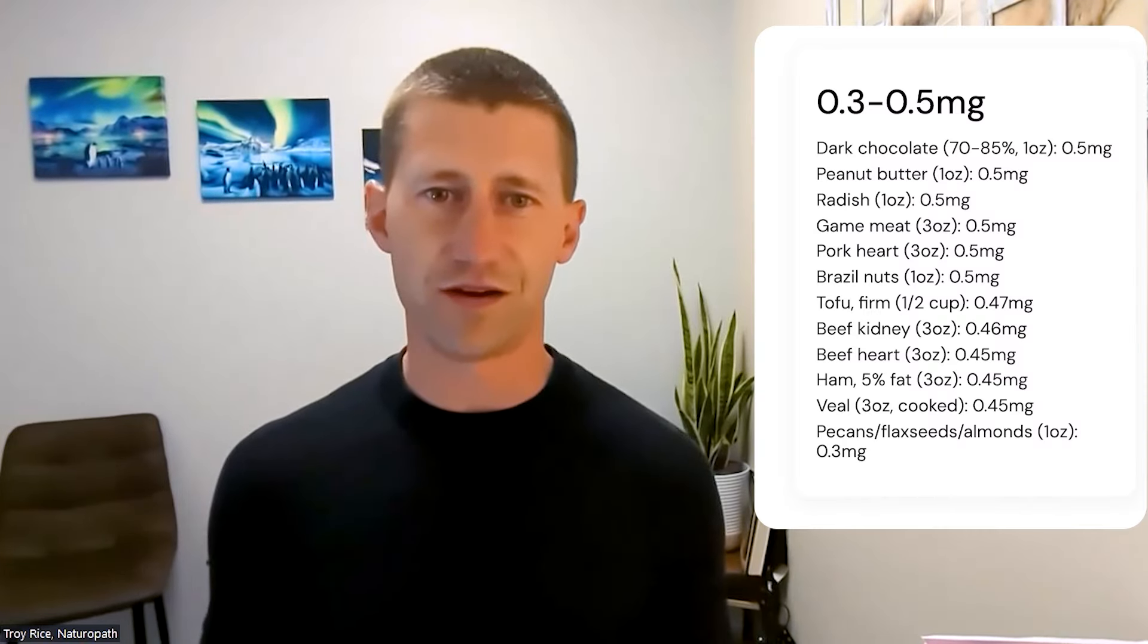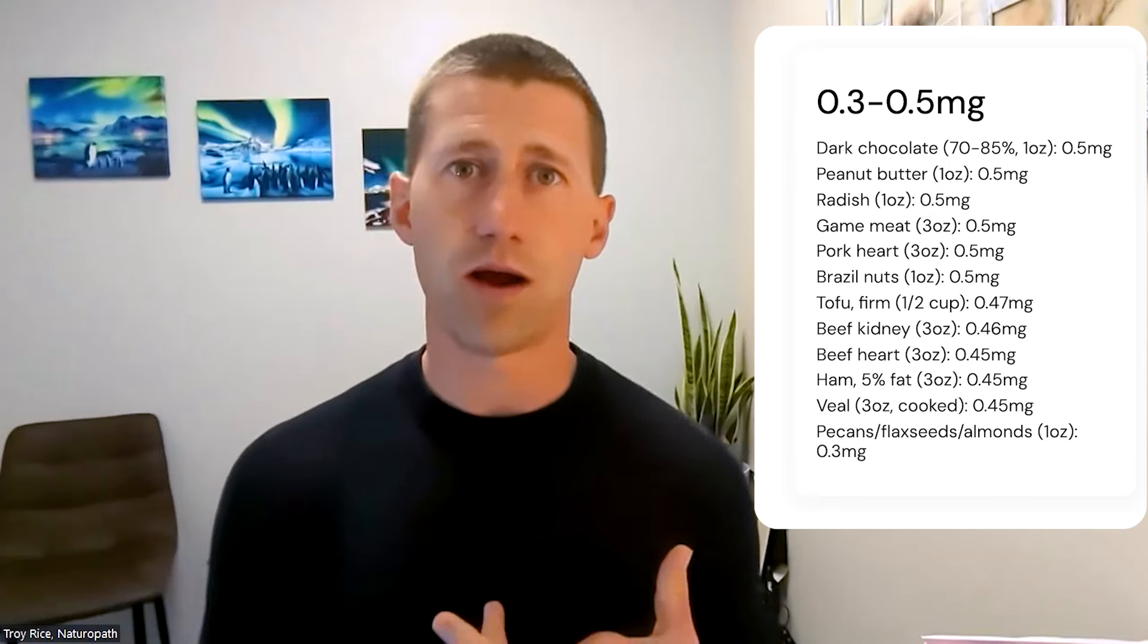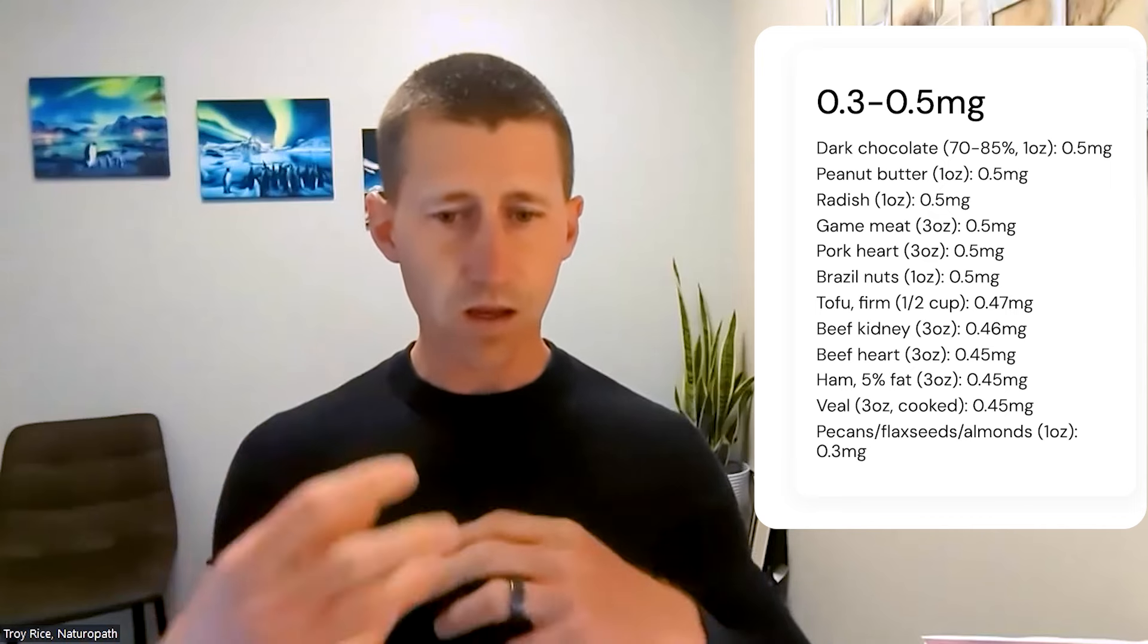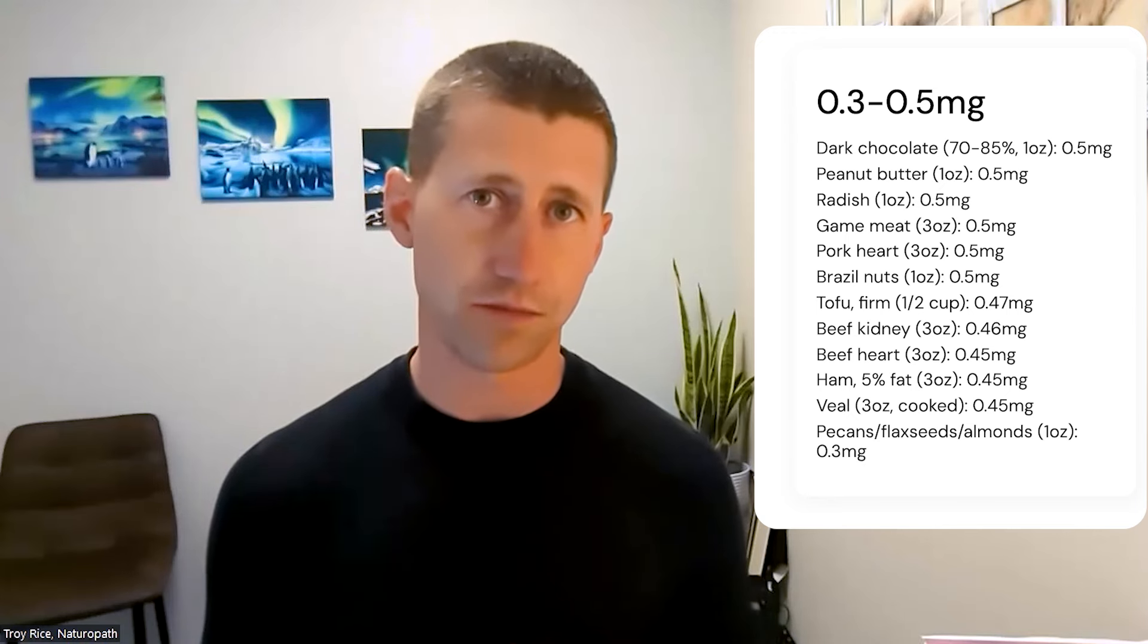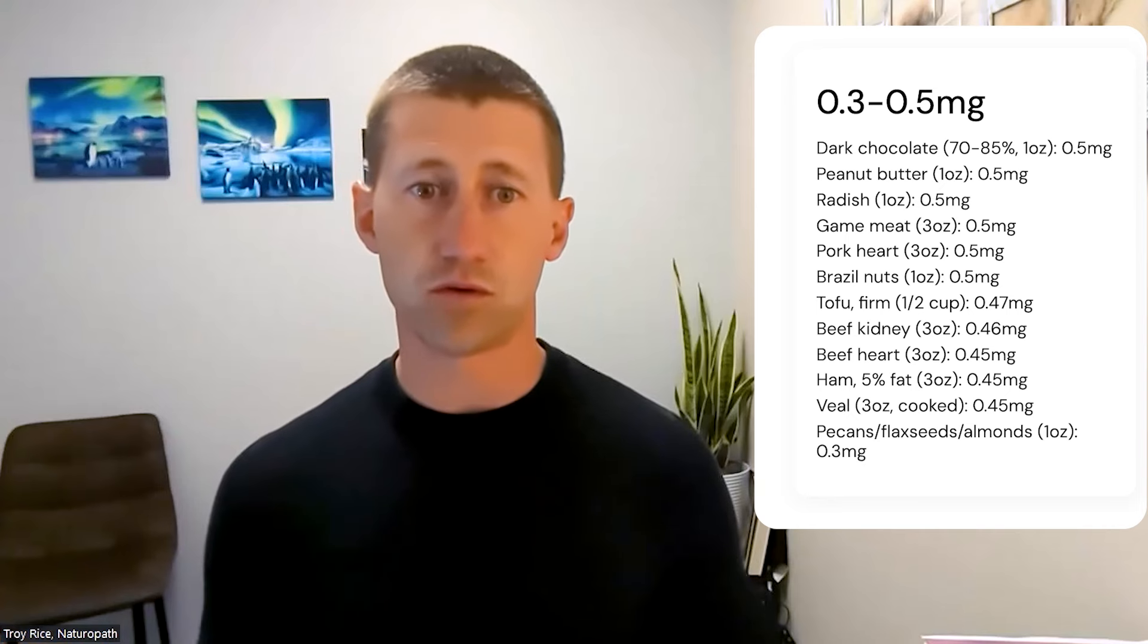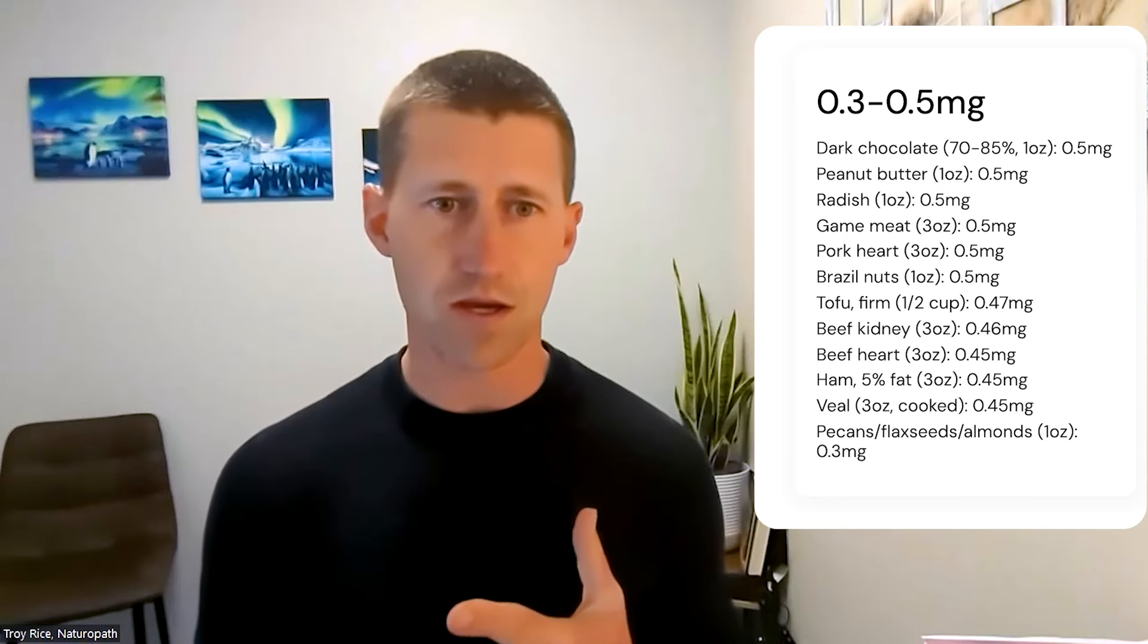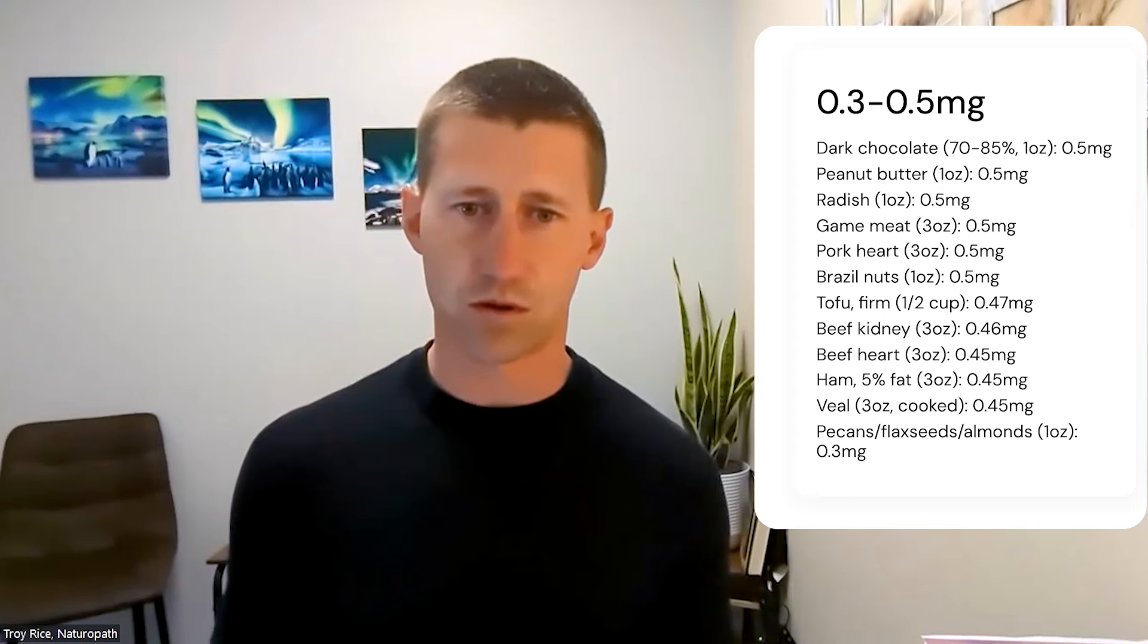If you're looking for smaller amounts that you can customize together within a given day to add up, dark chocolate. If you're a chocolate lover, there you go, 70 to 85% preferably to get your 0.5 milligrams. Peanut butter, if you're going to consume peanut butter, I would highly encourage Valencia peanuts have been found to have the least amount of mold toxicity found in it. Also, pesticides as well because a lot of your peanut fields, especially in the United States, are grown in the same fields that cotton is, which is heavily sprayed with things like glyphosate. Radishes are great. Game meat, like deer meat, things like that. Pork hearts, Brazil nuts, which are also heavy in selenium, are amazing. Tofu, beef kidney, beef heart, ham, veal, and pecans, flax seeds, and almonds also have around 0.3 milligrams per one ounce as well.